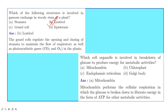Question: Which cell organelle is involved in breaking down glucose to produce energy for metabolic activities? The answer is mitochondria, known as the powerhouse of the cell. Mitochondria perform cellular respiration, in which glucose is broken down to liberate energy in the form of ATP for other metabolic activities.